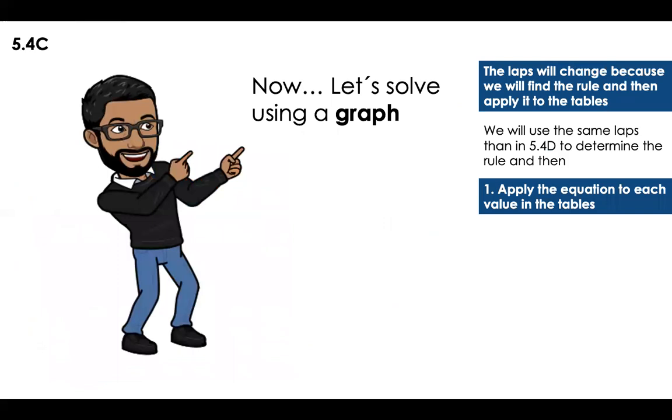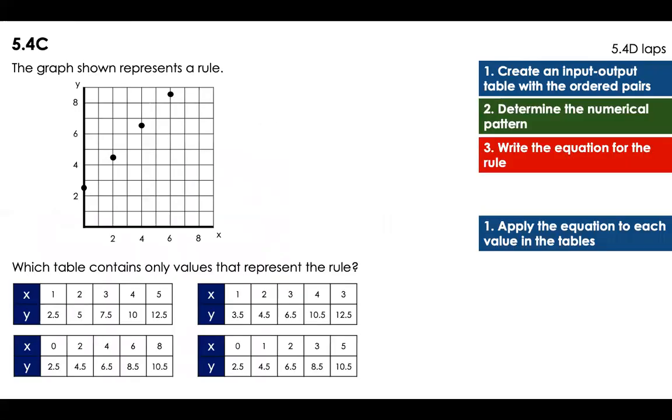Now, let's solve using a graph. The labs will change because we will find the rule and then apply it to the tables. So we will use the same labs that in 5.4D to determine the rule. And then we're going to do the lab that we did before. If you need to go to 5.4D to check again how to determine the rule, please go to my channel and check it. Now, let's work with this one. The graph shown represents a rule. Which table contains only values that represent the rule? Well, first I have to find the rule because I don't know it.